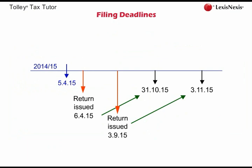If the taxpayer misses the 3rd of December 2015 deadline, all is not lost, because taxpayers have until the 31st of January to file their returns in order to avoid a penalty. The taxpayer would need to file an online return, in which case his tax liability will be calculated automatically. If the taxpayer misses the 31st of January 2016 deadline, HMRC will charge penalties for the late filing of the tax return.